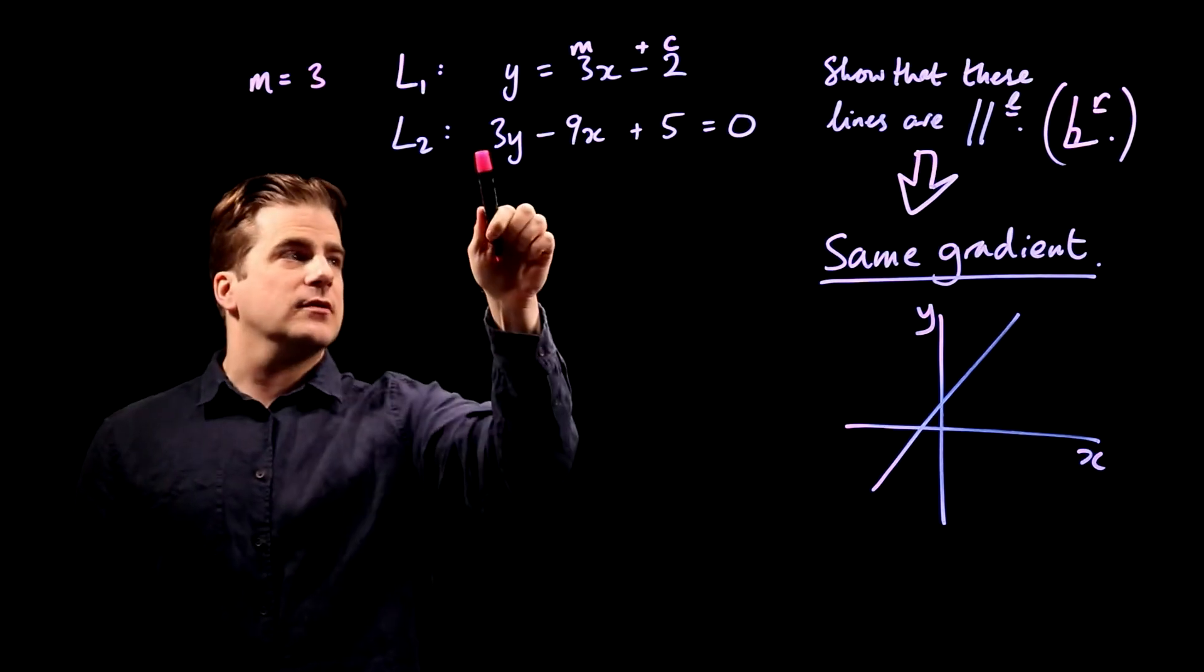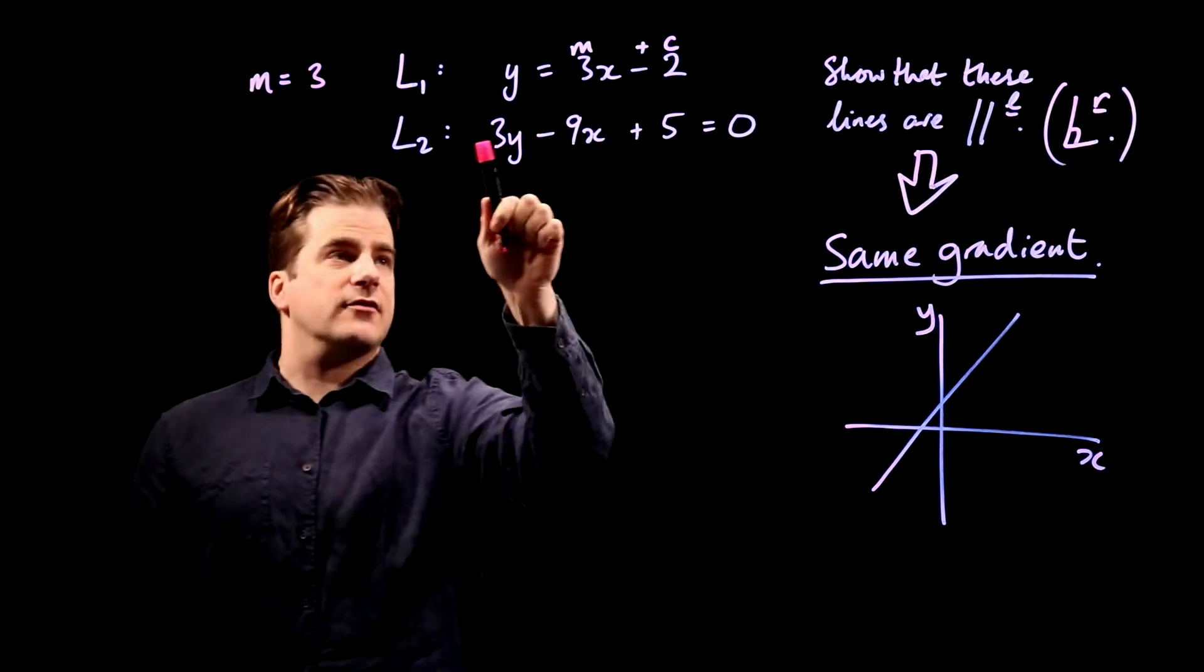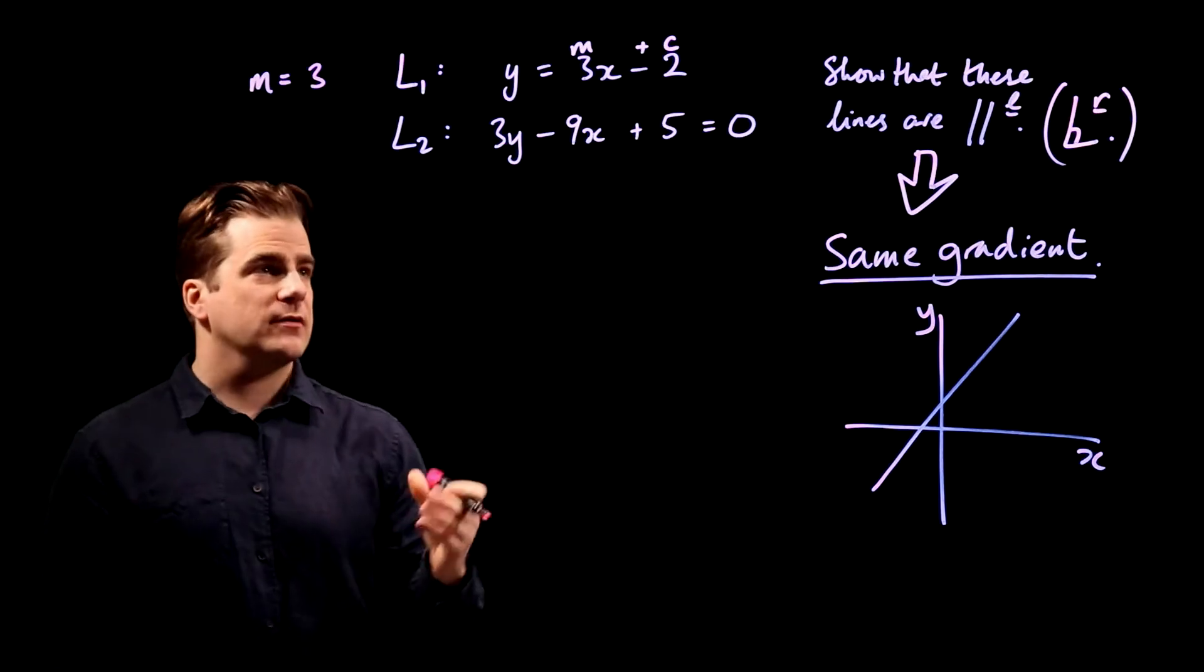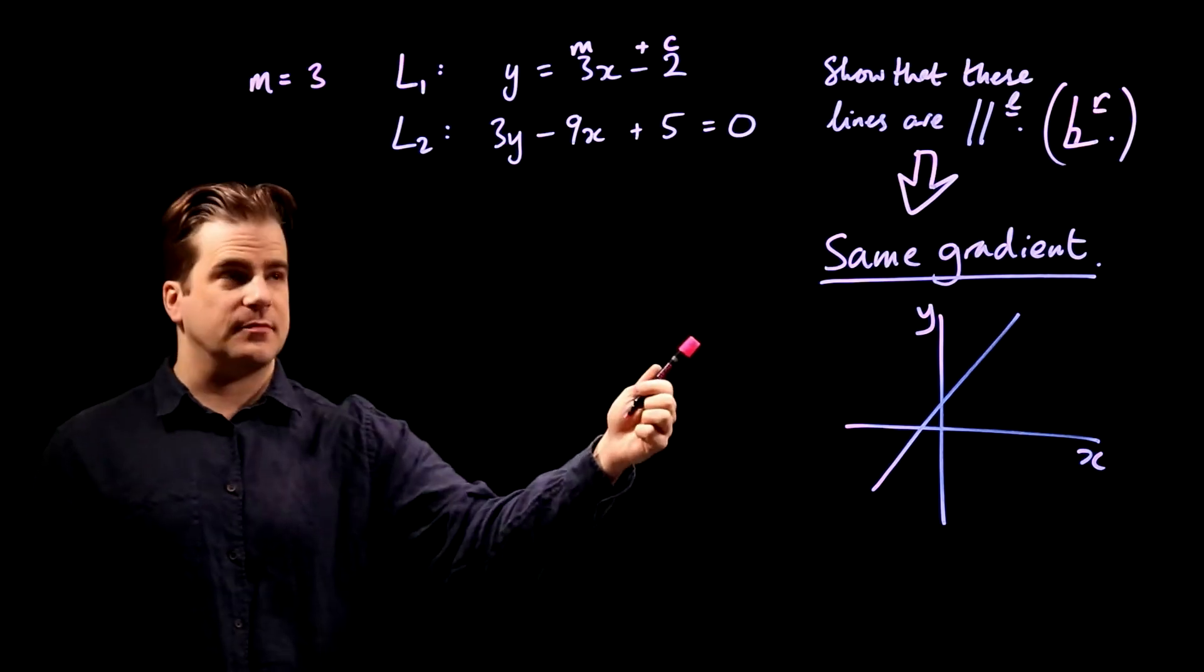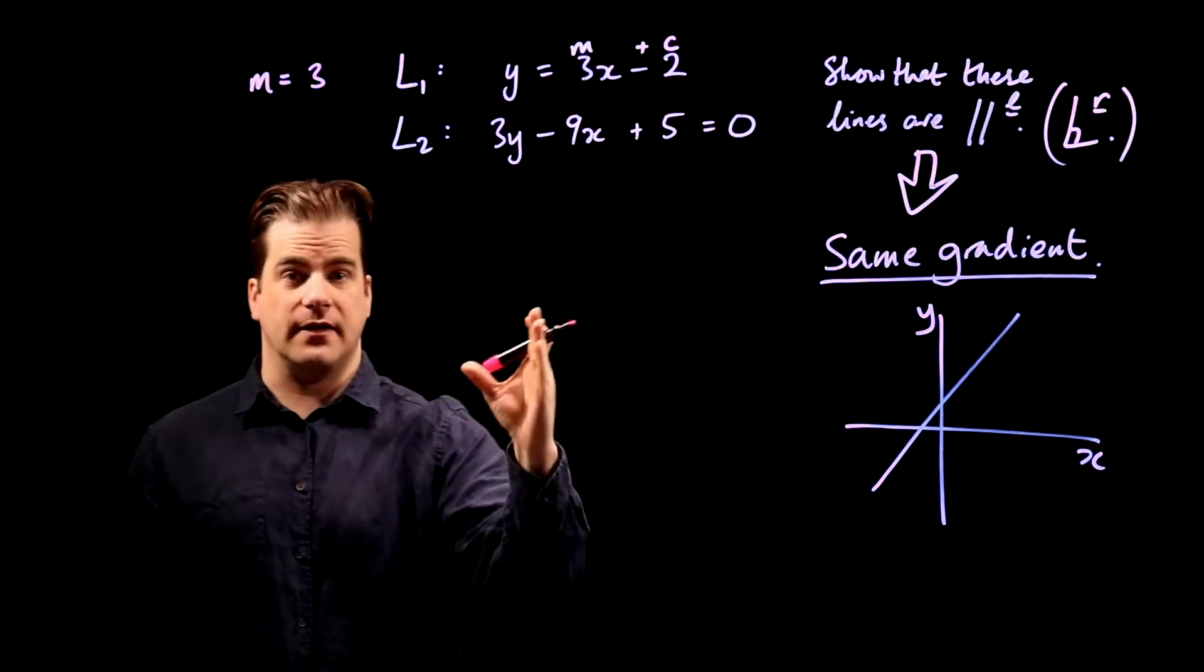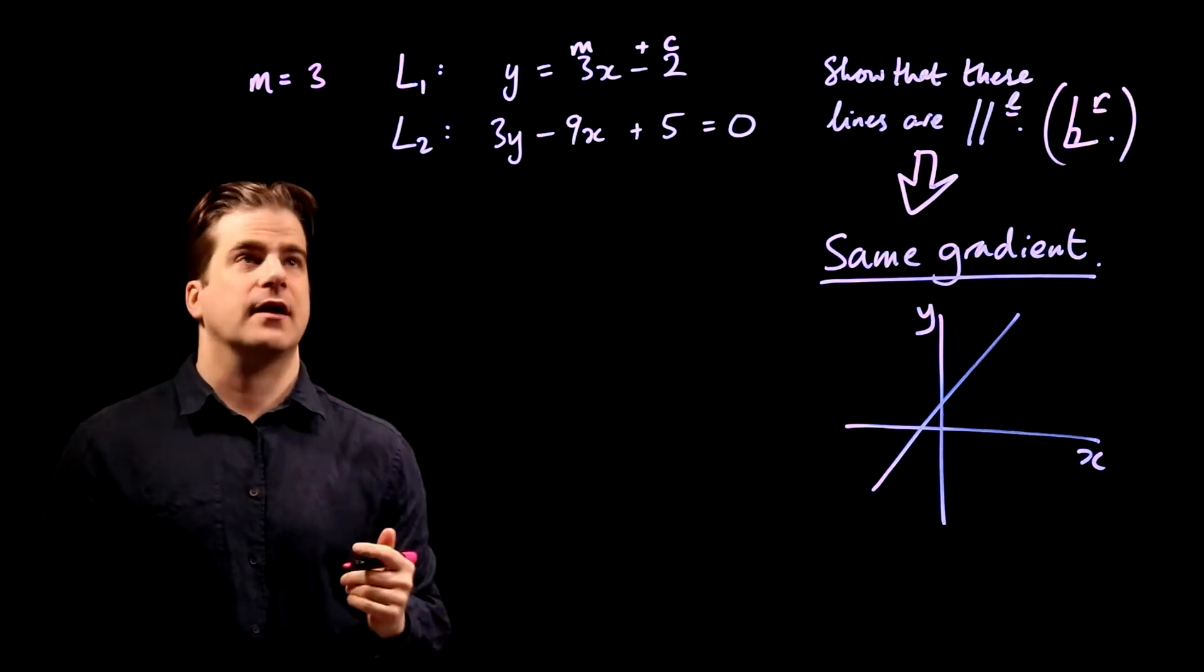So we've got to find the gradient of this line. Well, it's not in the form y equals mx plus c, so the first thing to do is to put it in that form, and then we can read off the gradient.